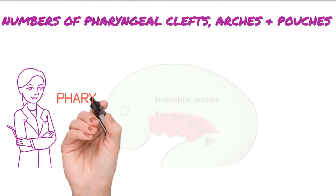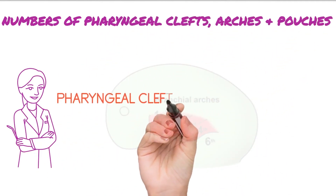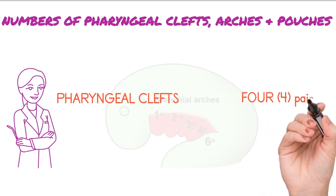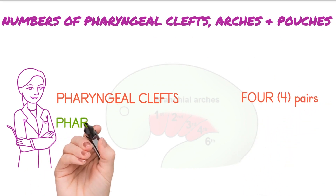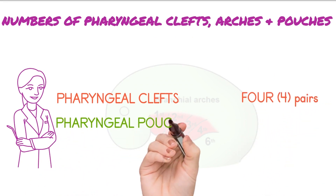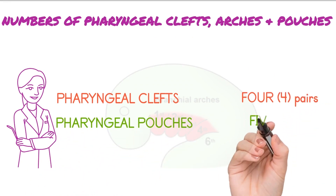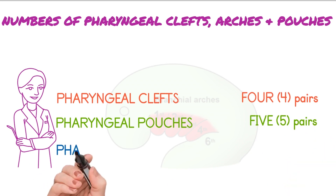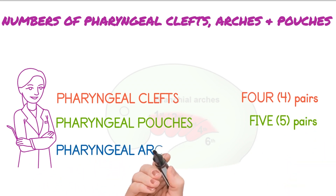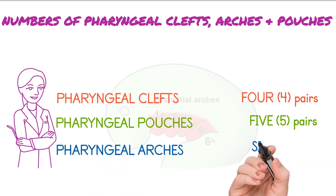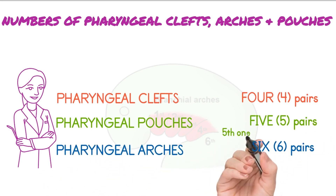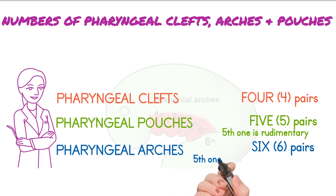Now, how many pharyngeal clefts, arches, and pouches are present in humans? There are four pairs of pharyngeal clefts, pharyngeal pouches have five pairs, and pharyngeal arches have six pairs in total. The fifth pair of pouches and arches is rudimentary in adults.